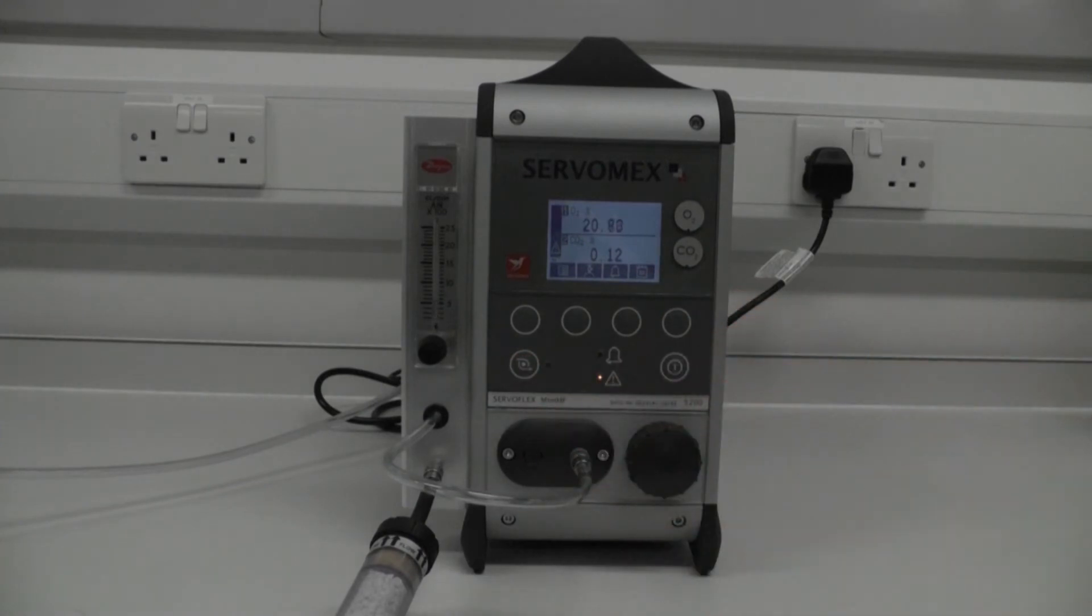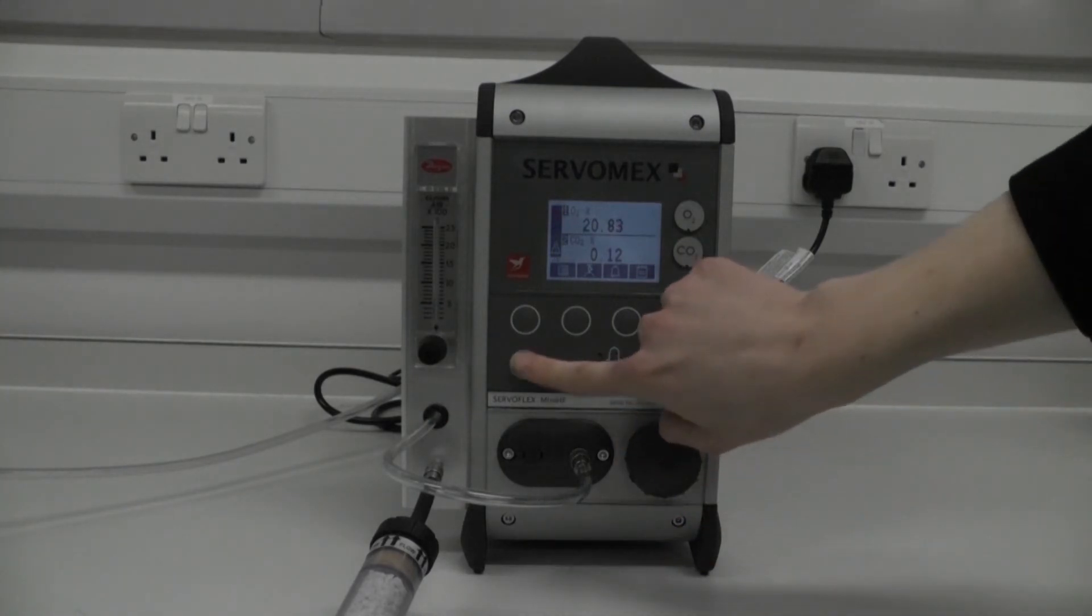Switch the motor button on and then wait for the numbers to stabilize before taking your reading of the percentage of oxygen and carbon dioxide in your sample. Then switch the motor button off and turn the valves back to the original position.